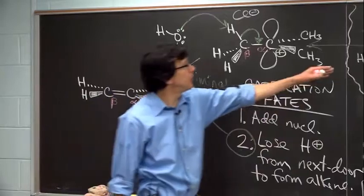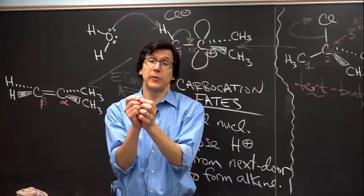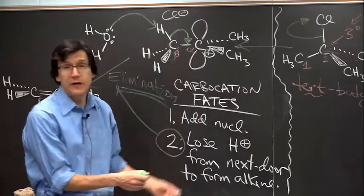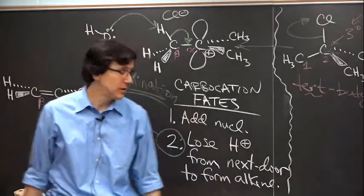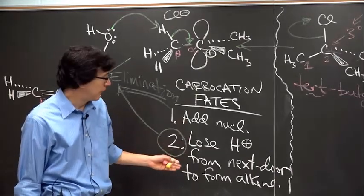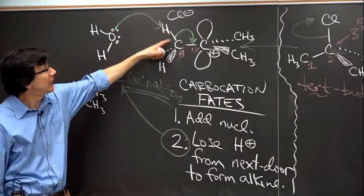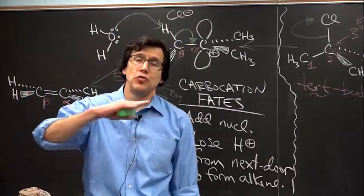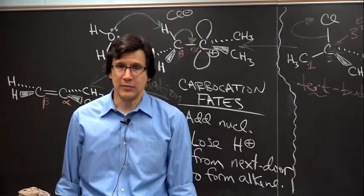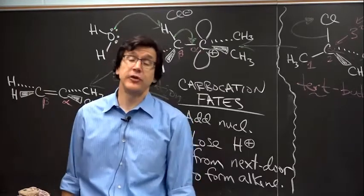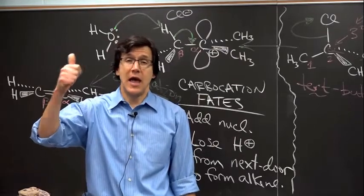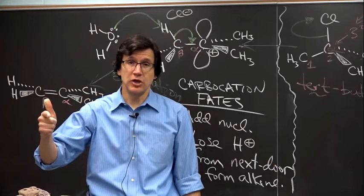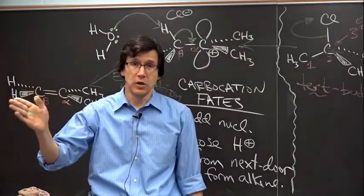So look what happens. The leaving group leaves, we make a carbocation. Now this carbocation has two possible pathways that it can react by. It can go through substitution, addition of a nucleophile. That's carbocation fate number one. That ultimately leads to the SN1 product. But there's also a second pathway, which may be quite competitive with the first, in which you lose a proton from next door, from the beta position. Notice this is lost as a proton because it leaves its pair of electrons behind. You lose a proton from next door, you make a double bond, and that carbocation fate is known as elimination. So you now know two of what will eventually be three carbocation fates. Fate number one, add a nucleophile to the carbocation. That's the one you're already familiar with. And here's this new one. The carbocation can undergo elimination. That means loss of a proton from the carbon next door to form a double bond.